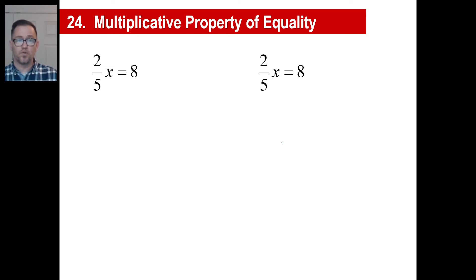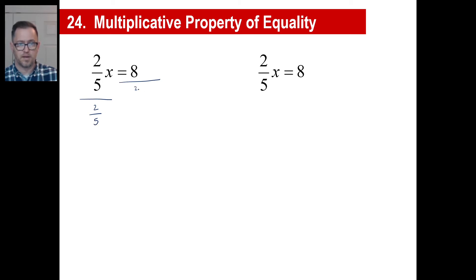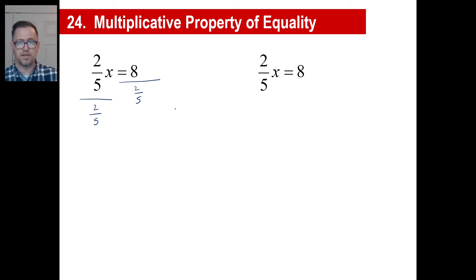We're going to do both ways. If you see something like 2 fifths x equals 8, you can divide both sides by 2 fifths. In other words, you go 8 divided by 2 fifths since you did it to the left side. Or, if you don't want to go through all that rigmarole of flipping fractions, you can just take the fraction in front of the x and multiply by the reciprocal.